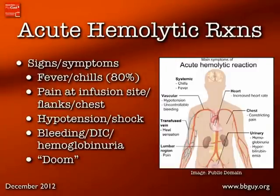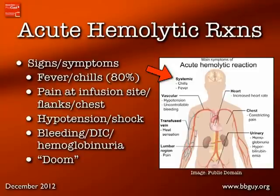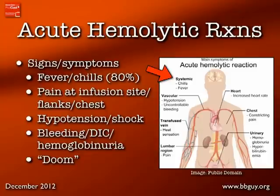So how do these patients present? There's a lot on the chart, but the key thing to remember — if you don't remember anything else — is that early in the presentation, when you can make a difference, 80% of these reactions present with fever and chills alone. Nothing else: no pain at the infusion site, no flank pain, no constricting chest pain, no hypotension, no sense of impending doom. Please don't ignore fever and chills in a transfusion patient.